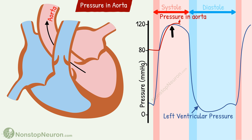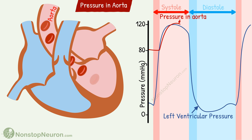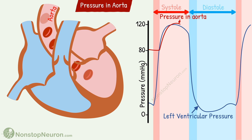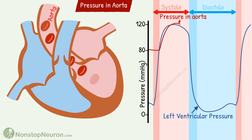Thus at this point, the pressure in the aorta is actually higher than that in the ventricle. In spite of this increased pressure in the aorta, the aortic valve does not close yet. This is because of the inertia of the blood flow. Ventricular pumping has imparted considerable kinetic energy to the blood.